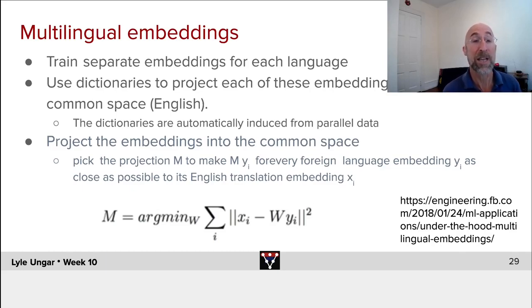Now what you can do is find a projection M, a matrix M, that maps every vector embedding of each word y_i in, say, Chinese - they're embedding the Chinese word so that you project that so that it's as close as possible. Minimize the Euclidean distance of that to the translation of it in English, the embedded English word.